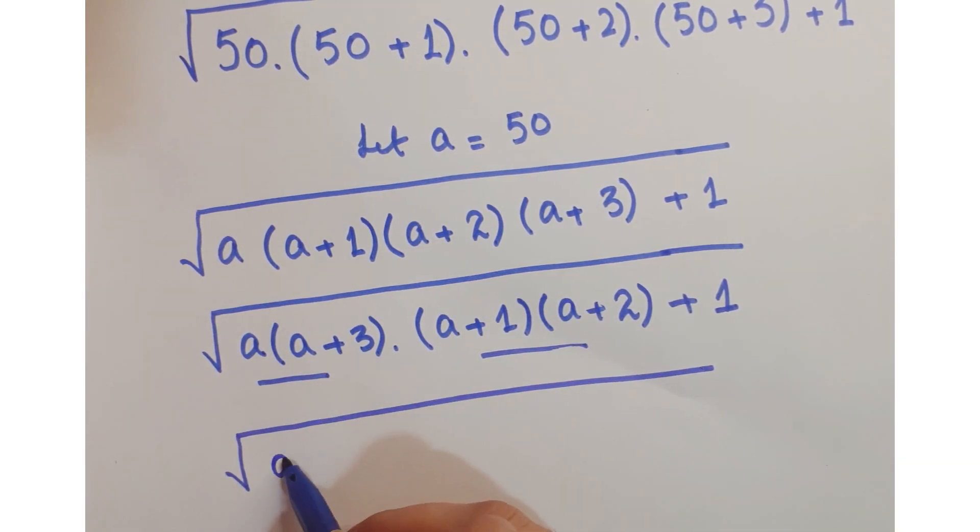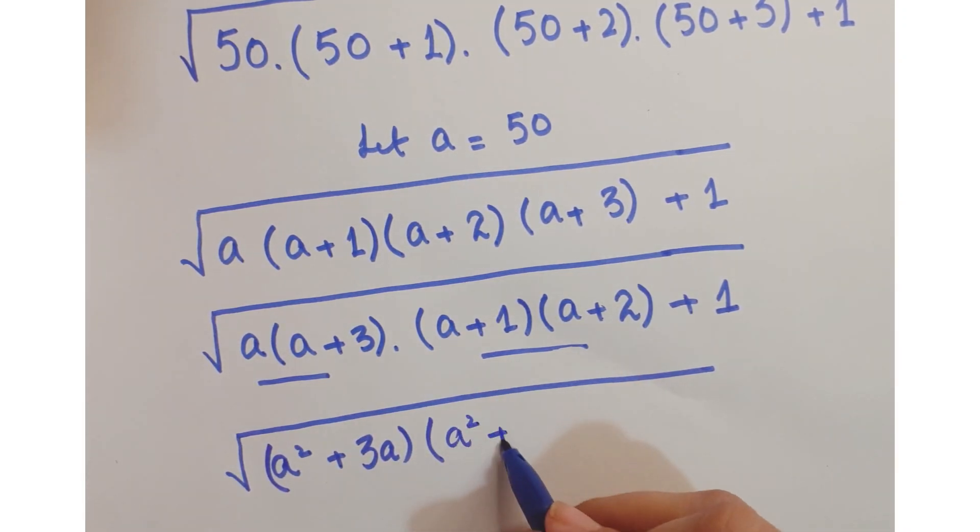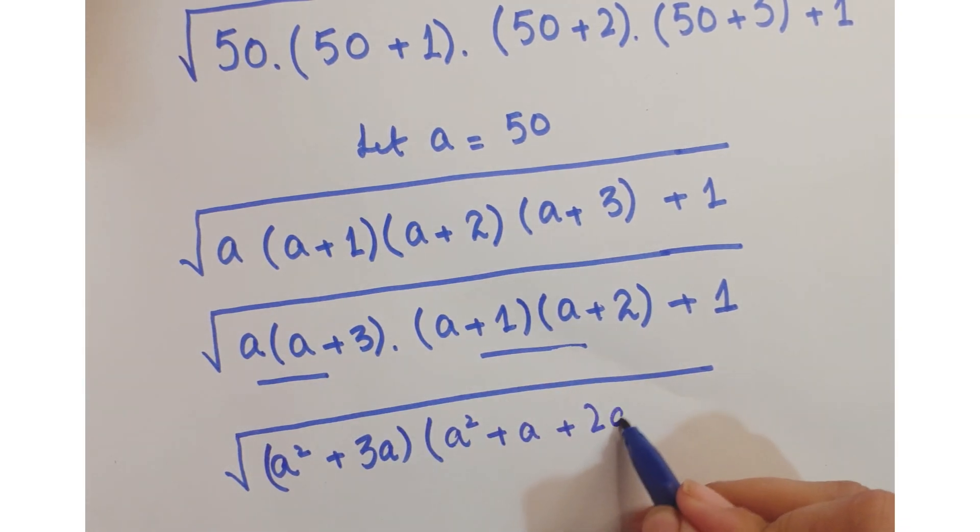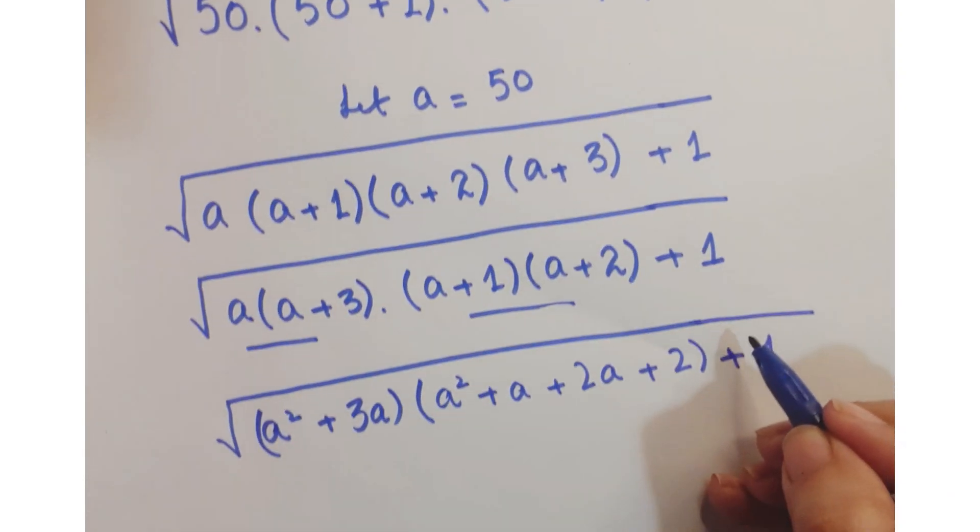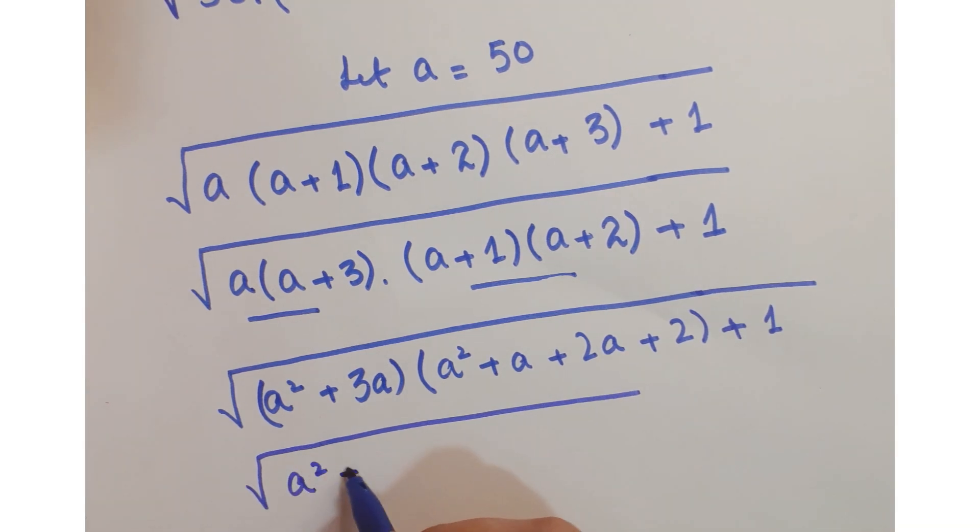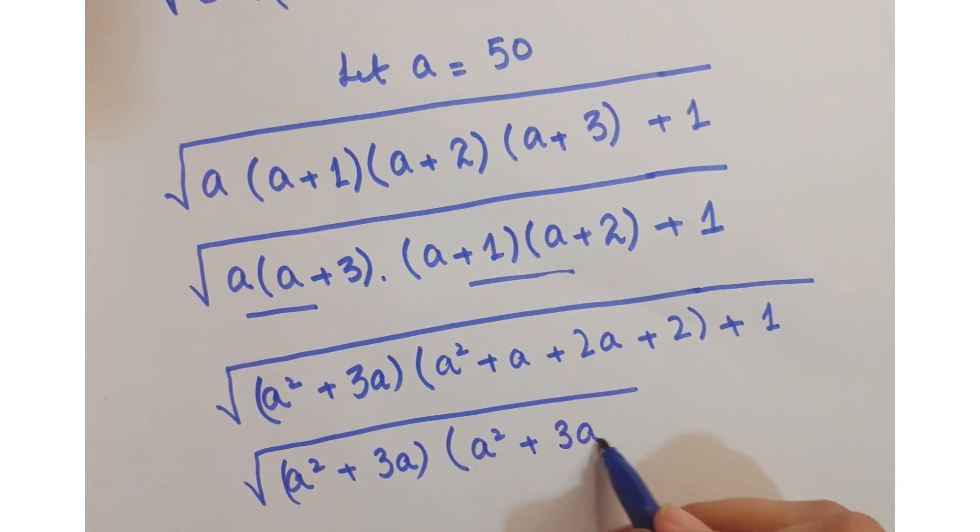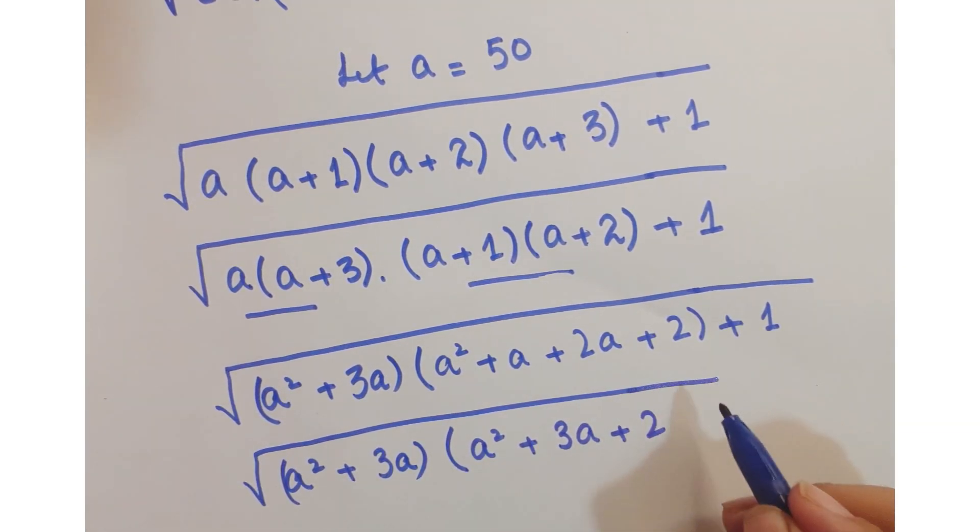Multiplying these two terms and these two terms. So we get here a squared plus 3a, and here you get a squared plus a plus 2a plus 2, into 1 is 2, plus 1.